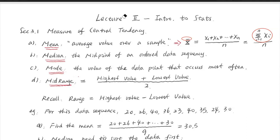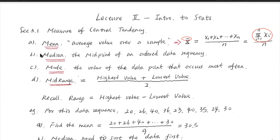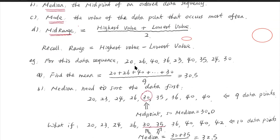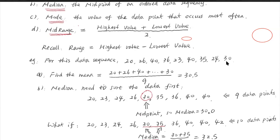I would like to use some examples here to help you understand those four different definitions. So this example here, we have a data sequence. We have 20, 26, 40, 26, 23, 40, 35, 24, 30, nine data points. So we are asking, can we find out what's the average, what's the mean? Very straightforward. We add them together, divided by nine data points. So with the answer we got here, 30.5.